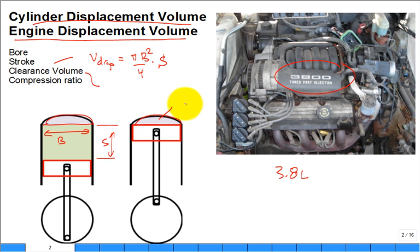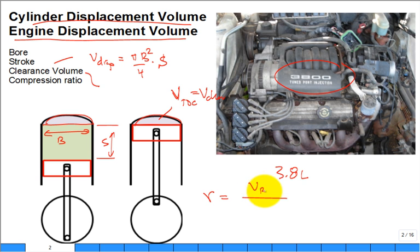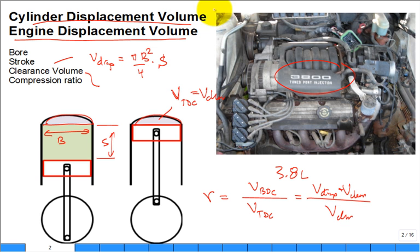Multiply that one-cylinder volume by the number of cylinders and you get the engine displacement volume. Does the clearance volume come into play? The clearance volume is the volume at top dead center. The compression ratio r is the volume at bottom dead center divided by the volume at top dead center. The volume at bottom dead center is the displacement plus the clearance volume.